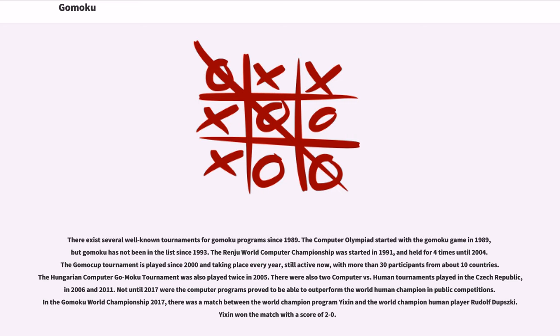The Hungarian Computer Gomoku tournament was also played twice in 2005. There were also two Computer vs. Human tournaments played in the Czech Republic, in 2006 and 2011. Not until 2017 were computer programs proved to be able to outperform the world human champion in public competitions.